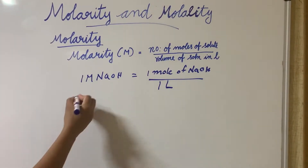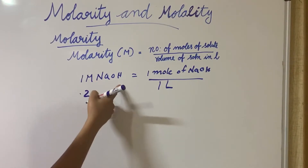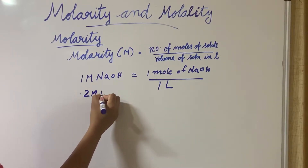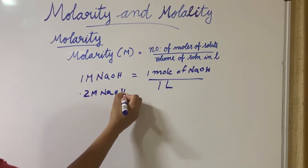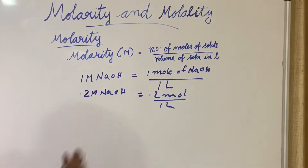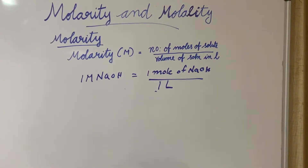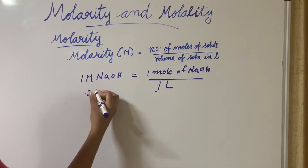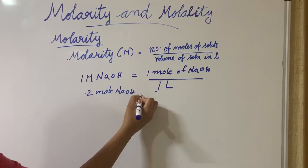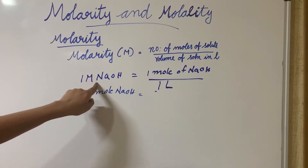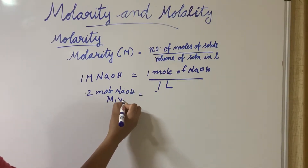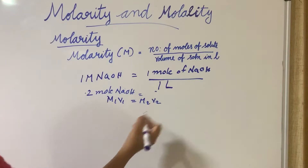Now let's say 0.2 mol. We have 0.2 mol in 1 liter. We will use the dilution equation: M1 times V1 is equal to M2 times V2, which is a simple equation.